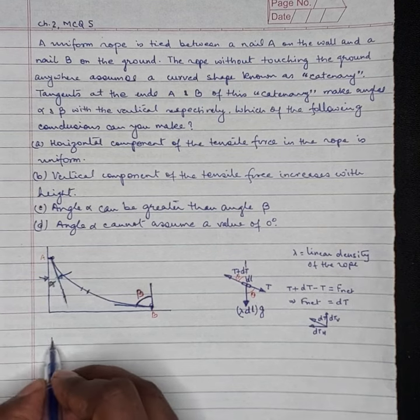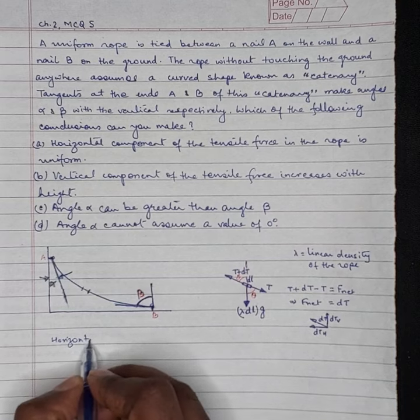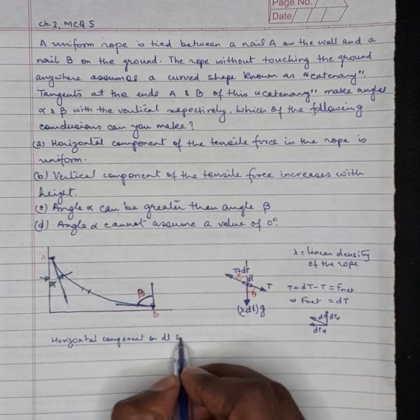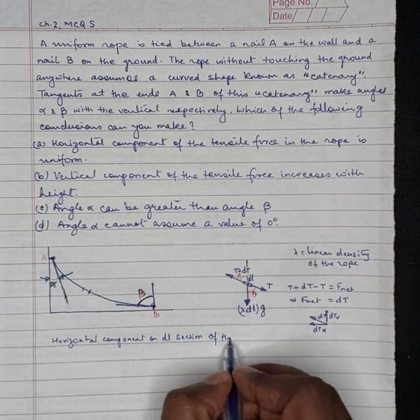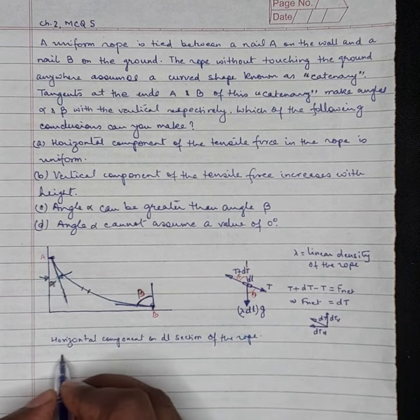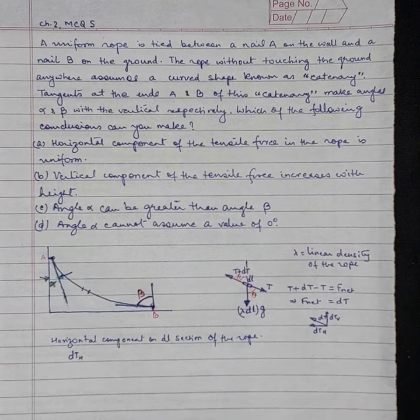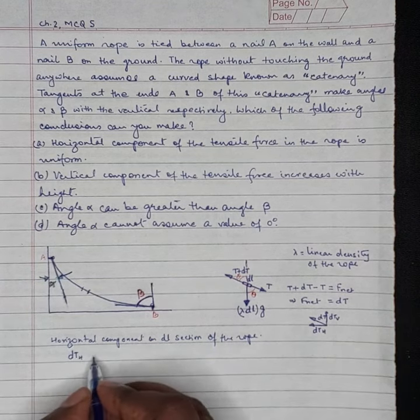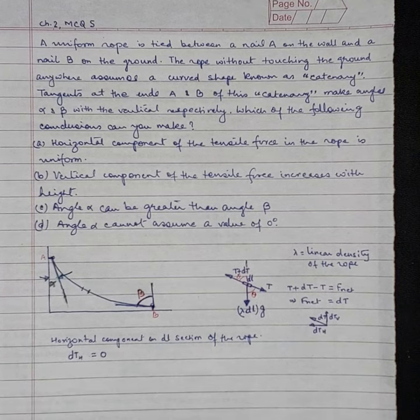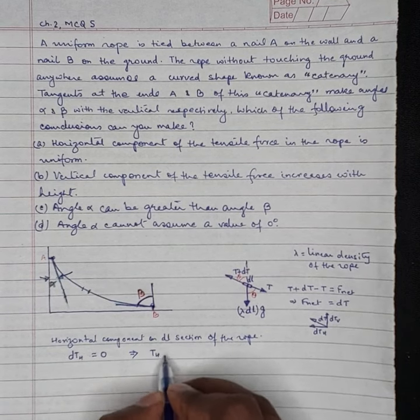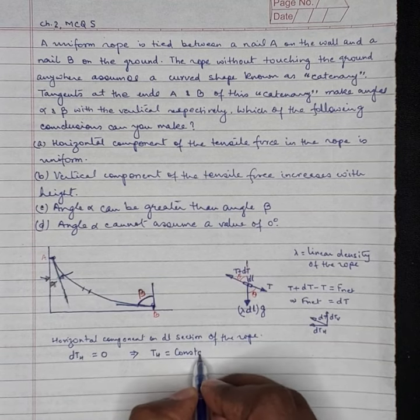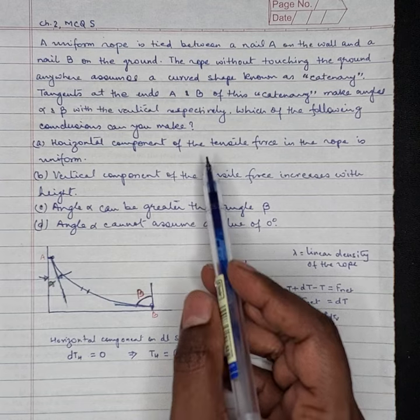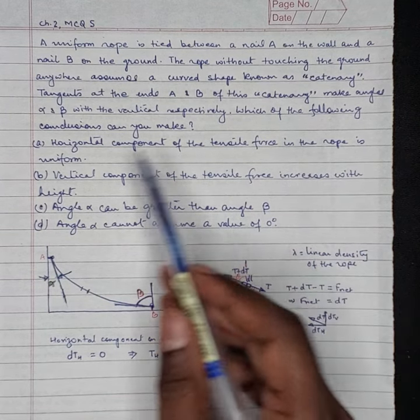So if we focus on horizontal component on this section of rope, we can write it as dT horizontal, but in the horizontal direction there is no other force acting on it. So it must be dT_H must be 0. So therefore, T_H should be constant along the horizontal direction. This means tensile force horizontal component of the tensile force in the rope is uniform. So A will be one answer.